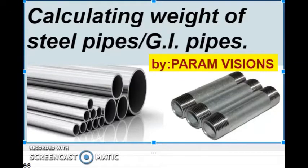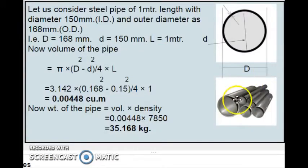Now we will see how to calculate the weight of steel pipes or GI pipes. We will consider for the calculation purpose a pipe of 1 meter length and inner diameter as 150 mm and outer diameter 168 mm. This is inner diameter, that is small d, and capital D is the outer diameter of the pipe.